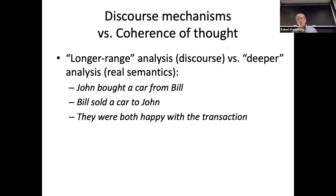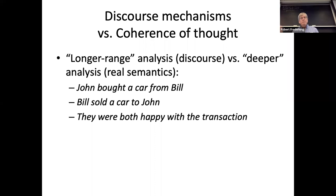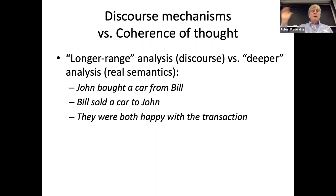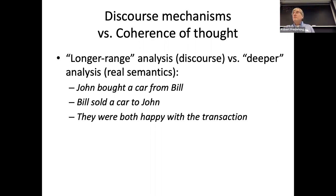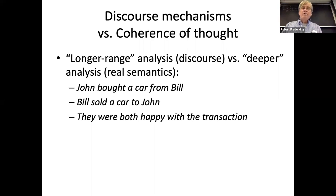There seem to be multiple layers of mechanisms going on in dialogue. If someone says 'John bought a car from Bill,' they can also say 'Bill sold a car to John' — describing exactly the same real-world event. But when you say it one way or another, you're affecting the state of your dialogue, what aspect of the real-world event you're focusing on, and that affects the way the rest of the conversation goes. People do this on purpose in ways that are not fully understood.